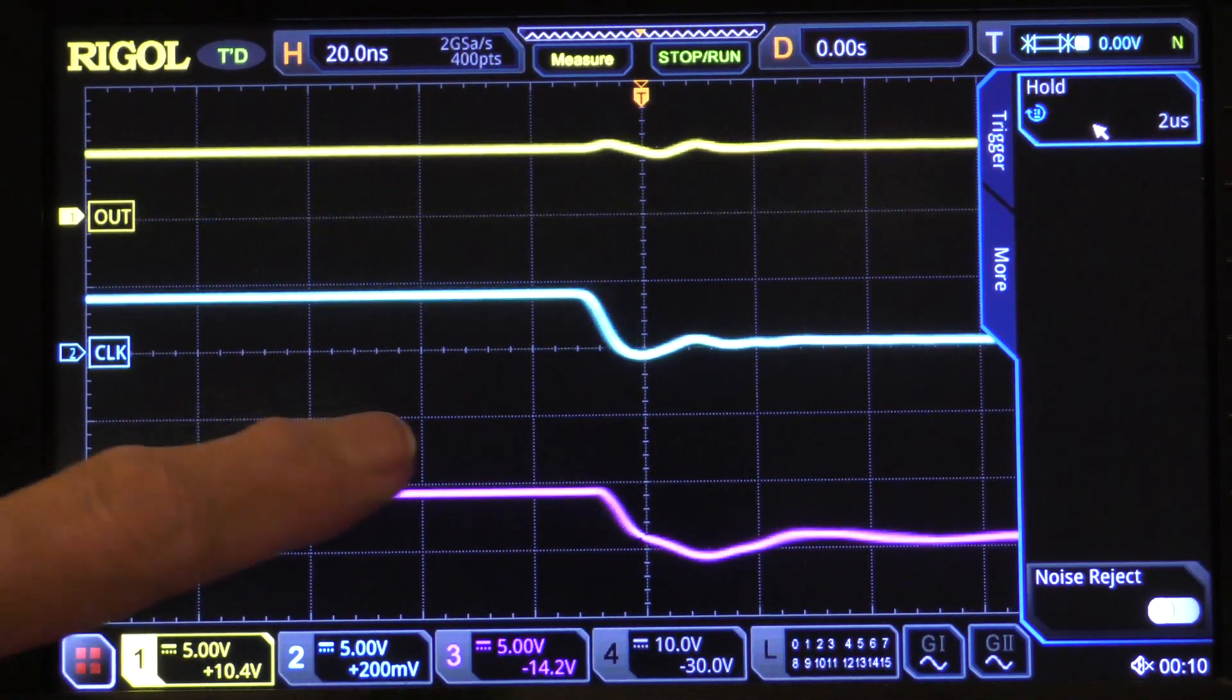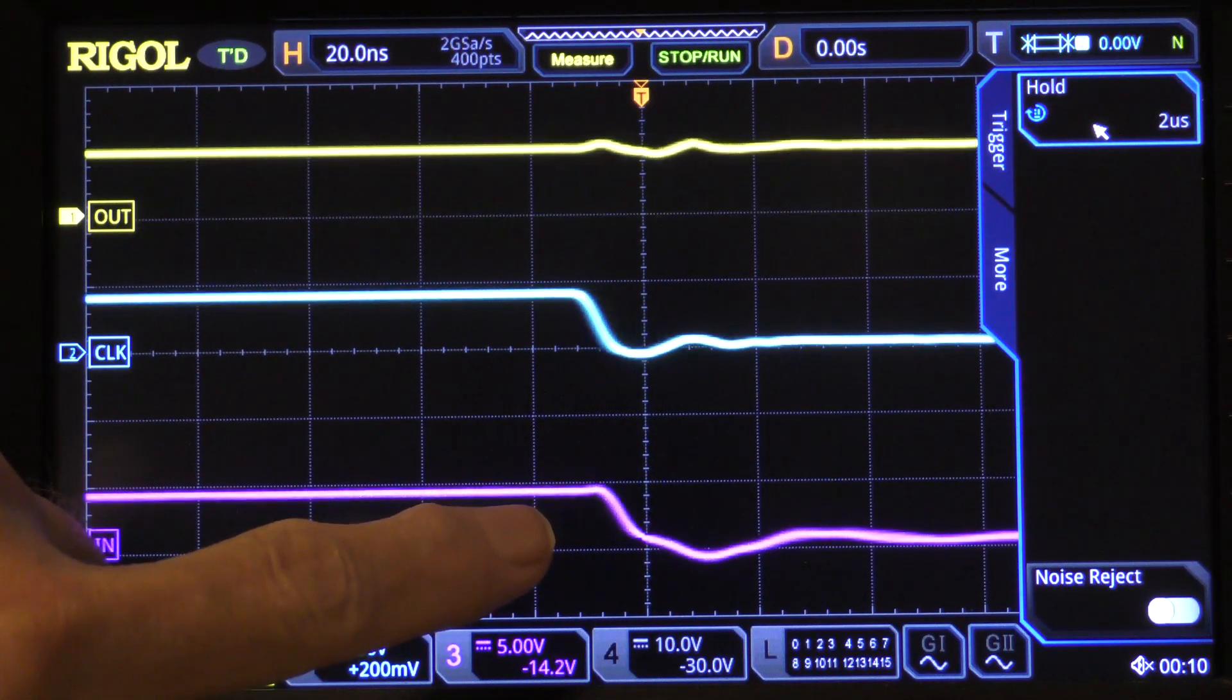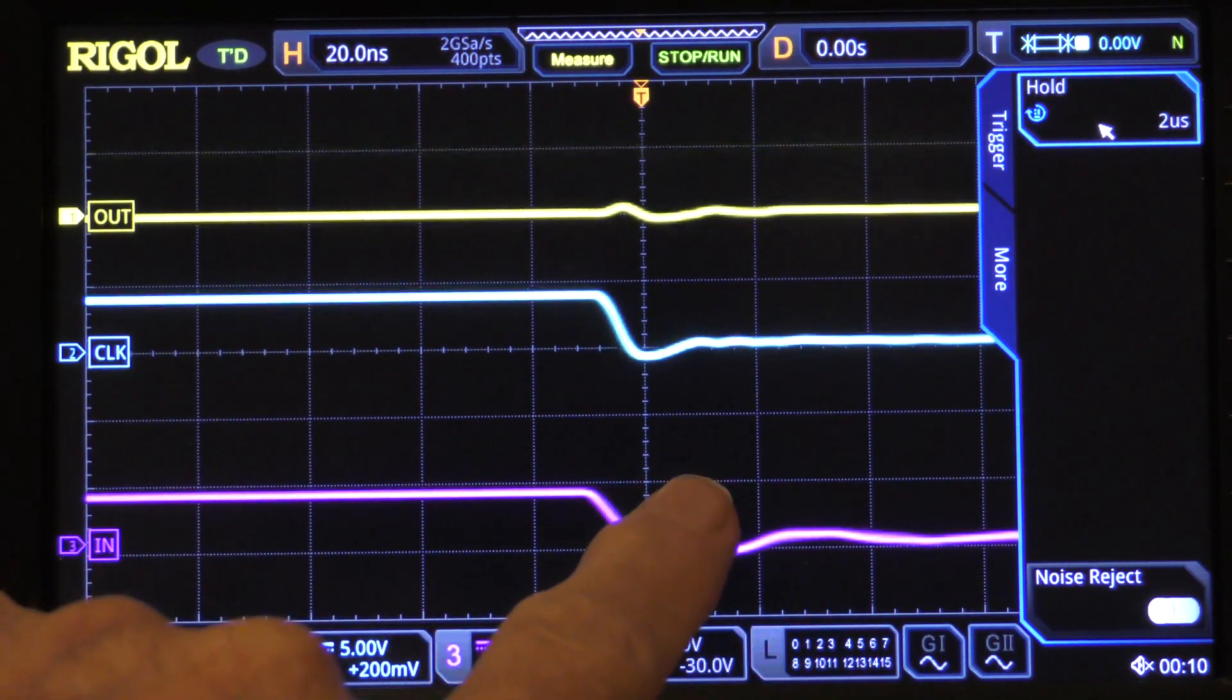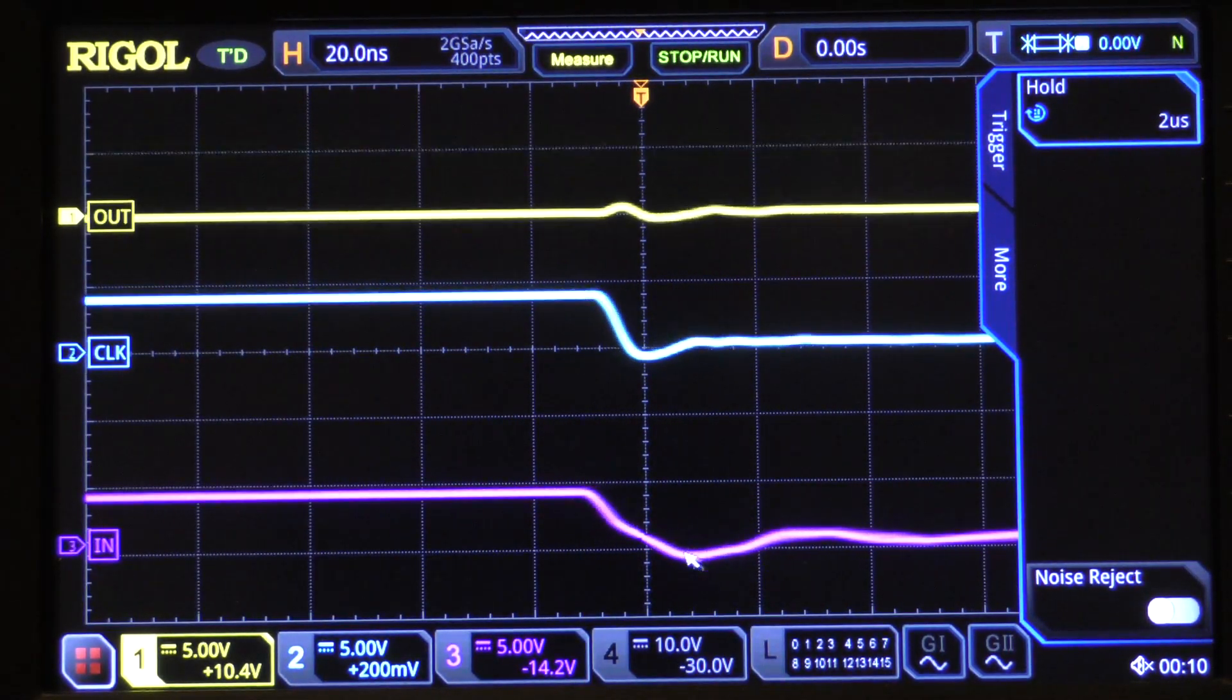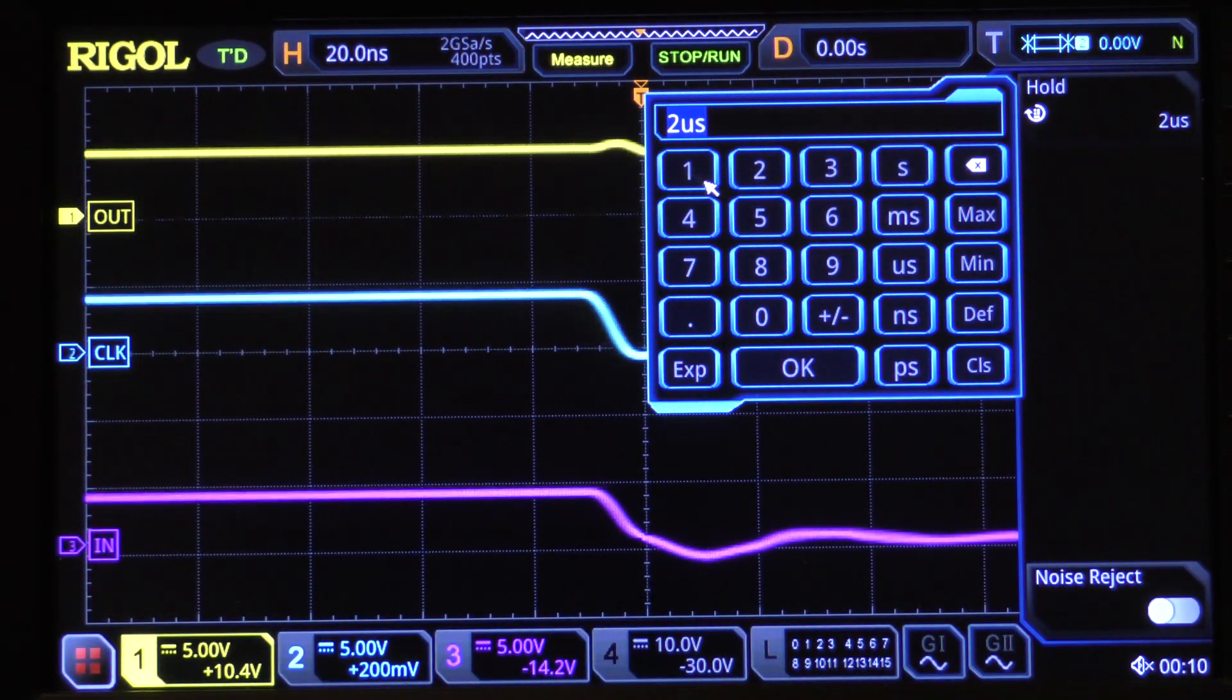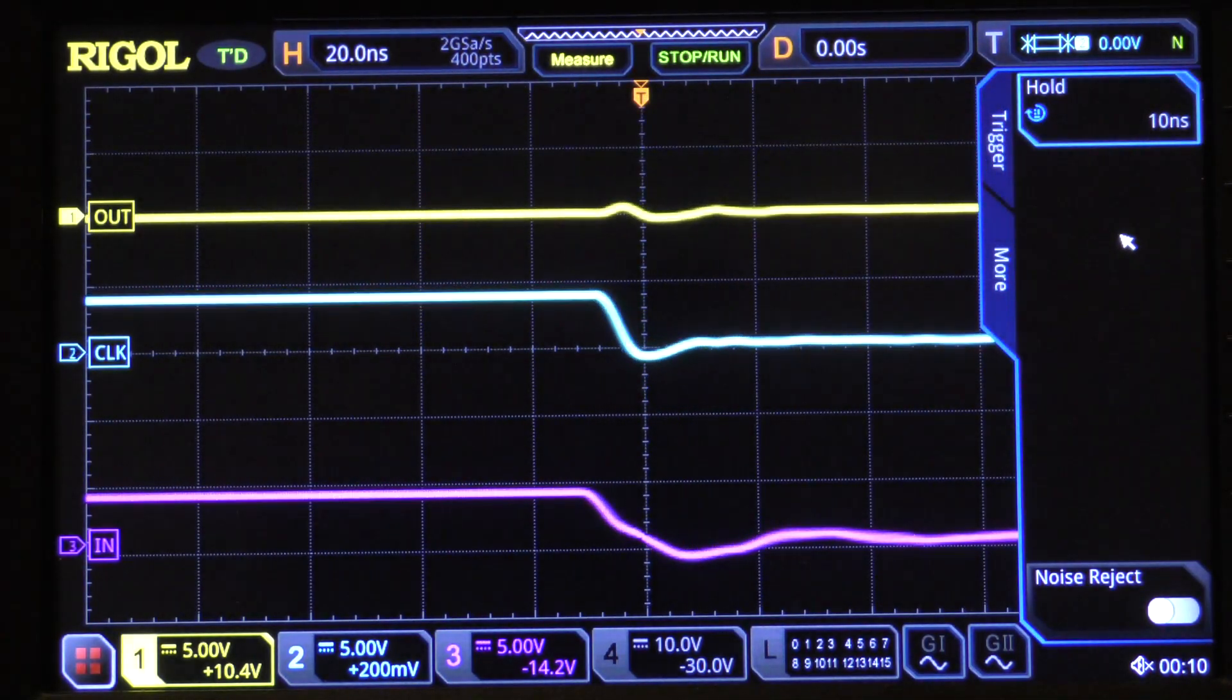But suppose that we had said 2 microseconds. Since we're saying that the higher value of hold time just makes it more likely that a hold violation will occur. In this particular case, since we're looking at the hold violations, 10 nanoseconds is good enough.